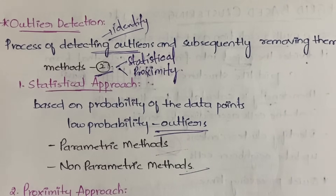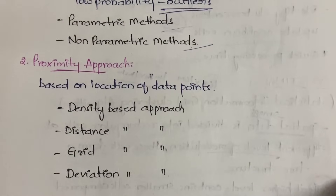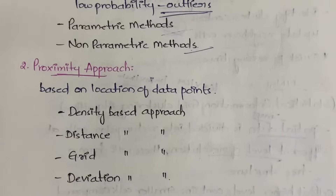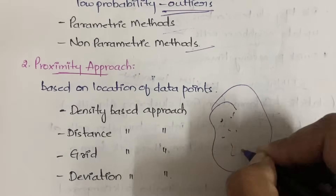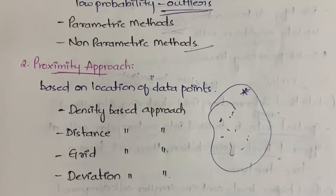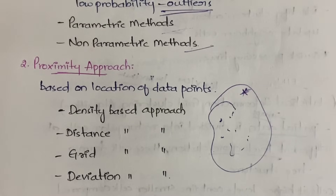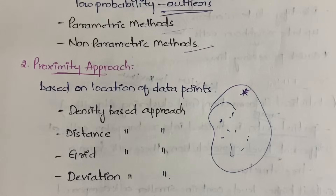Within the statistical approach, we have two sub-methods: parametric and non-parametric — separate videos will be made for those. The second main method is the proximity-based approach, which is based on the location of the data points. Suppose all data points are clustered in one area and you have one data point away from them — it depends on whether a point is within the cluster or outside it. Within proximity, we have density-based, distance-based, grid-based, and deviation-based approaches, each covered in separate videos.